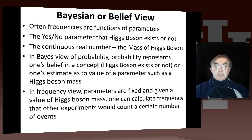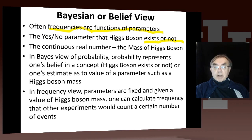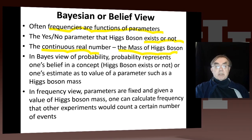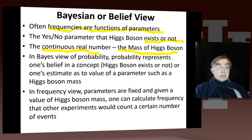We have frequencies, which are functions of parameters. A very simple parameter is the yes-no parameter: does the boson exist or not? That's a very simple measurement. Or we also study the continuous real number — the mass of the Higgs boson. So in the Bayesian view of probability, the probability represents one's belief in the concept — the Higgs boson exists or not — or one's estimate or belief as to the value of a parameter, such as the Higgs mass.